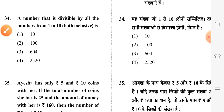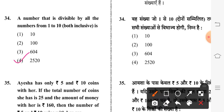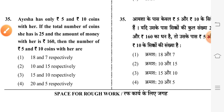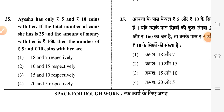Question 34: a number that is divisible by all numbers from 1 to 10, both inclusive, is — fourth option is correct: 2520. Question 35: Aisha has only 5-rupee and 10-rupee coins. The total number of coins is 25 and the total amount is 160 rupees. The number of 5-rupee and 10-rupee coins with her — first option is correct: 18 and 7.